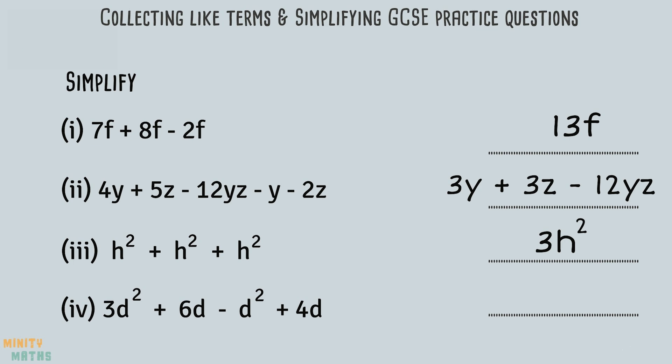Finally, question 4 contains two different types of terms: d and d squared. Although both of these contain the variable d, they are not classed as like terms as they have different powers. So we cannot add or subtract a term in d to a term in d squared. To simplify this we can collect the like terms.